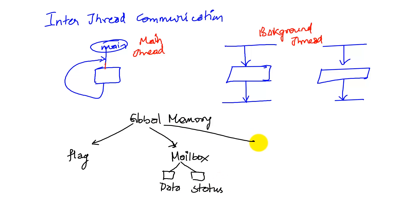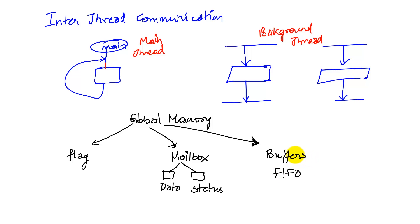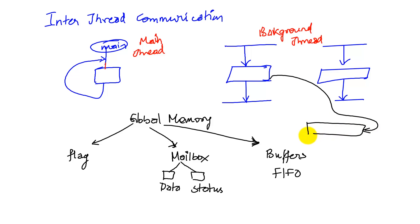The third method is what good real-time systems should use because it allows for good asynchronous communication. These are buffers — specifically a FIFO, which allows us to buffer data. The background thread, if it wants to communicate to the main thread, adds to a buffer.